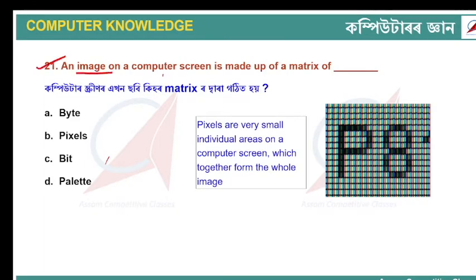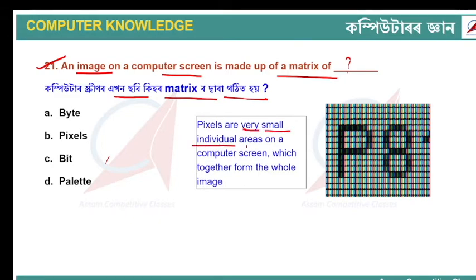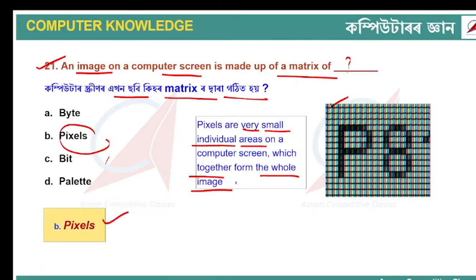Question: An image on a computer screen is made up of a matrix of what? A computer screen is made up of a matrix of very small individual areas. These very small individual areas are called pixels. Pixels are the basic units that form the image on screen — the more pixels, the easier it is to zoom.